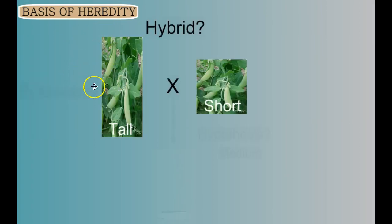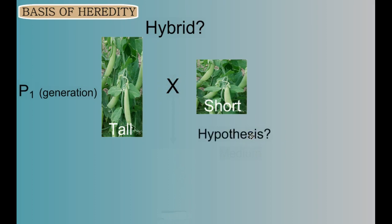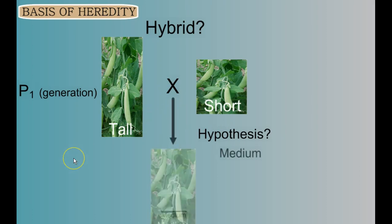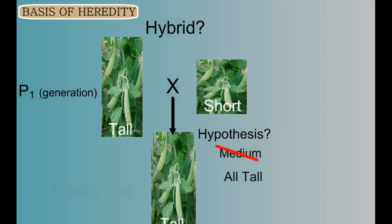So what happens when we make a hybrid — when we cross one of these pure breeding tall plants with one of these pure breeding short plants? We'll call this the P1 generation, or the parent generation. What do you hypothesize would be the results? It would not be unreasonable to hypothesize that all the resulting plants would be medium in height — in fact, that's a very logical conclusion. However, every time Mendel made this cross between a pure breeding tall plant and a pure breeding short plant, all the resulting plants were tall — 100% of the time, no exceptions.